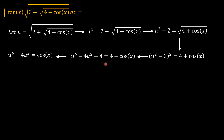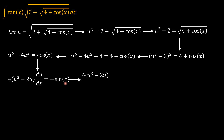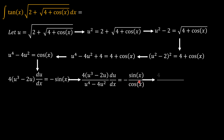Now I begin to see light at the end of the tunnel. Differentiating both sides with respect to x gives 4u³ minus 8u times du/dx, which we can factor as 4 times (u³ minus 2u) du/dx, equal to negative sine x. Dividing both sides, we get the left side over u⁴ minus 4u² and the right side becomes negative sine x over cosine x — which is a negative tangent.